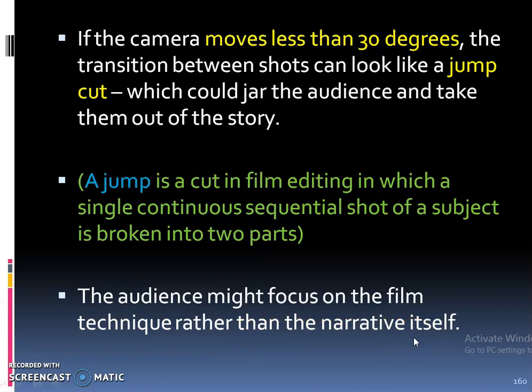So when the camera angle changes between shots, the change must be more than 30 degrees, creating a significantly different angle on the characters. This method also ensures continuity. And if the change of angle is less than 30 degrees, it will end up in a jump cut.